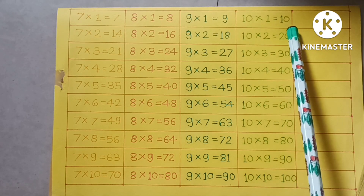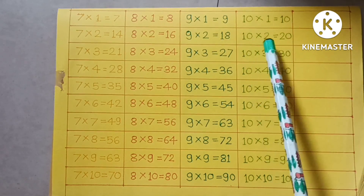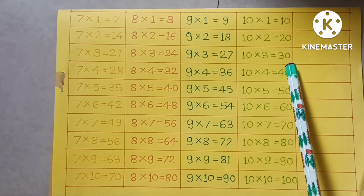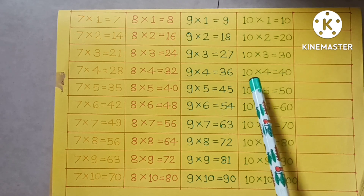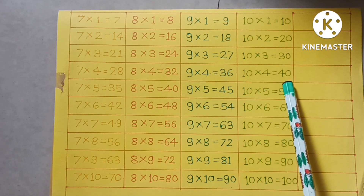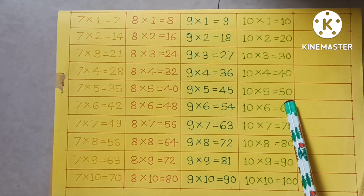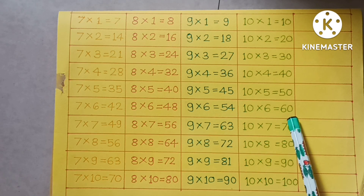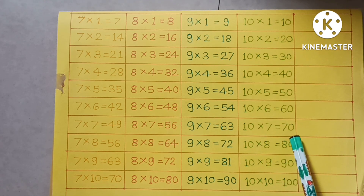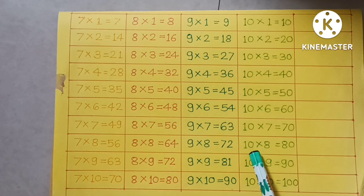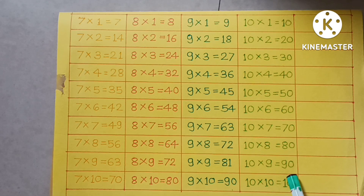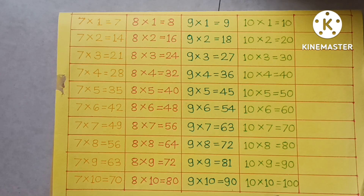10×1=10, 10×2=20, 10×3=30, 10×4=40, 10×5=50, 10×6=60, 10×7=70, 10×8=80, 10×9=90, 10×10=100.